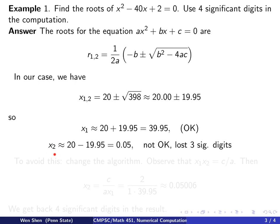Now if I want to compute the second root, which involves a subtraction between these two numbers, I end up doing 20 minus 19.95, and what I get is 0.05 — I have only one significant digit, and this digit 5 is not accurate. It could be 0.045 or all the way to 0.054. So the error is about 10%, which is pretty bad.